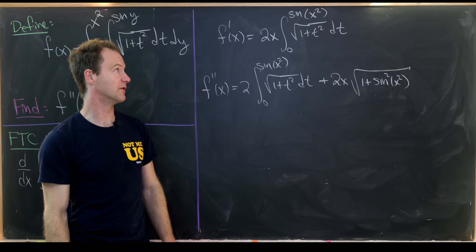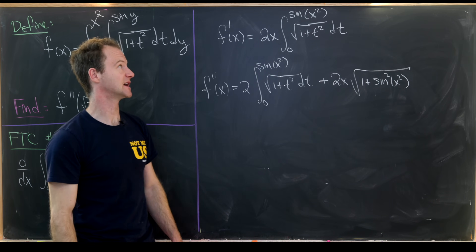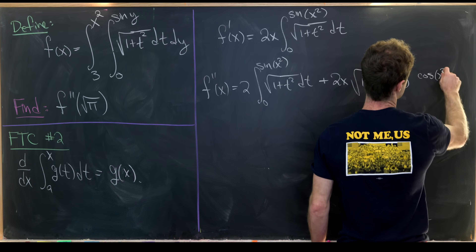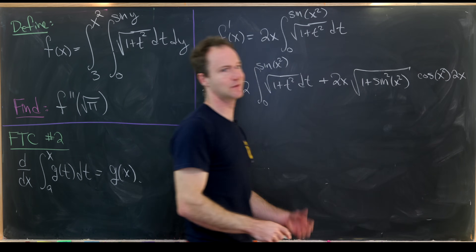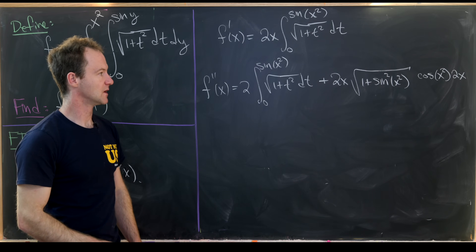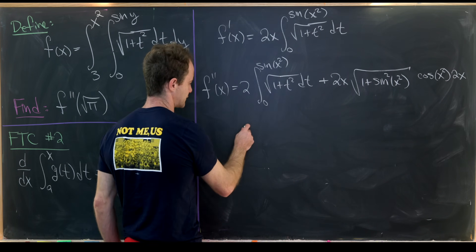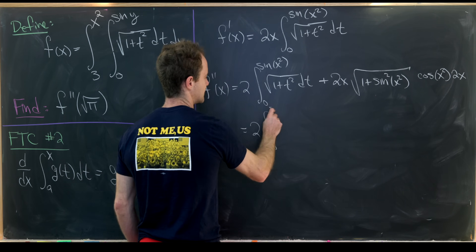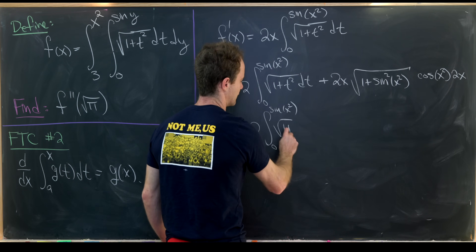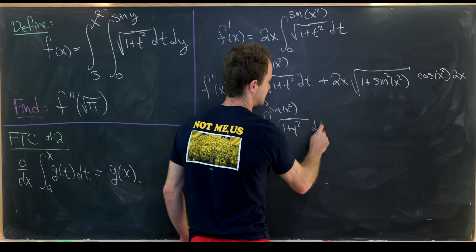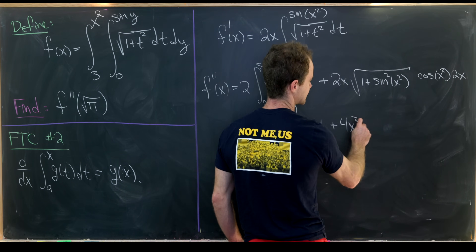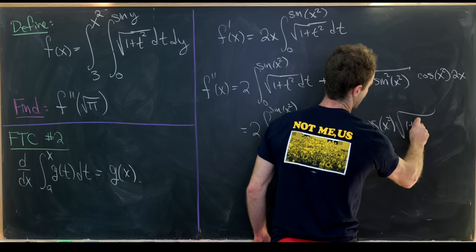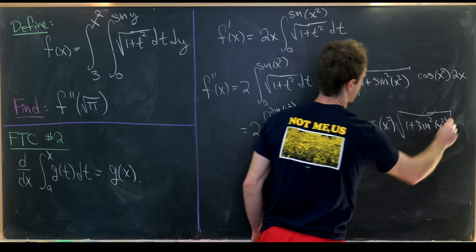We also need the derivative of the inside function, sine(x²). By chain rule within chain rule, that gives cosine(x²) times 2x. So rewriting and combining: f''(x) equals 2 times the integral from 0 to sine(x²) of the square root of 1 plus t squared dt, plus 4x² times cosine(x²) times the square root of 1 plus sine squared of x squared.